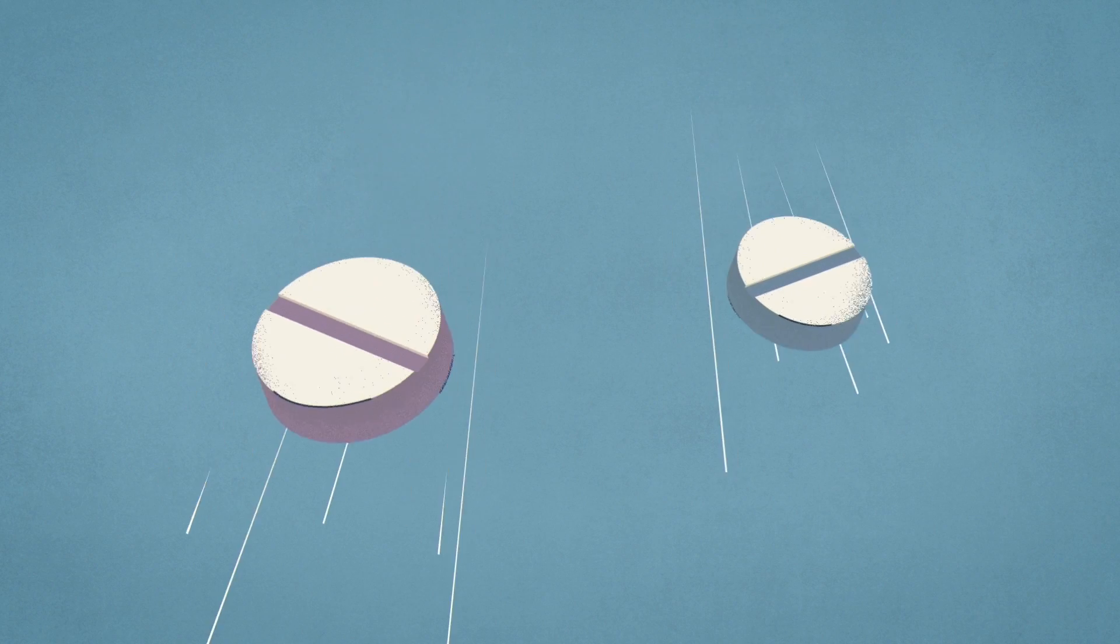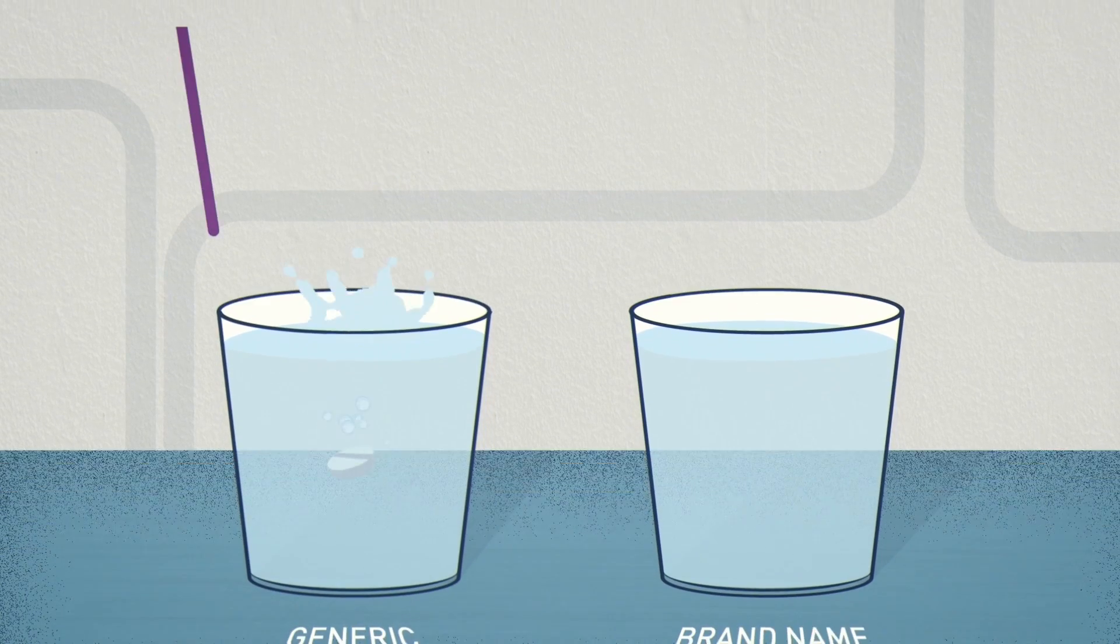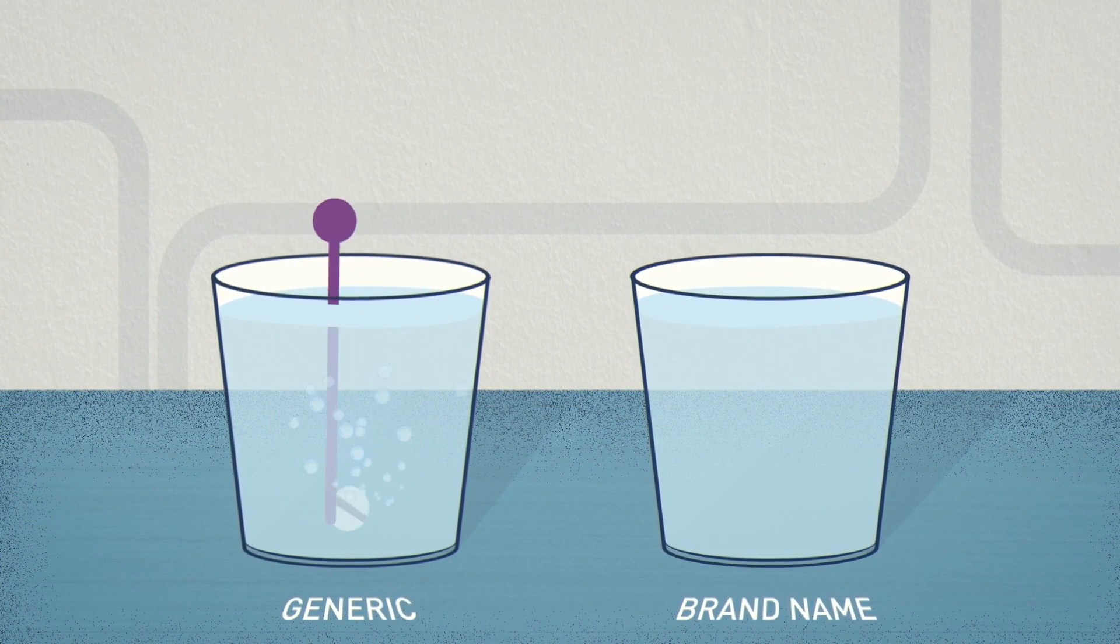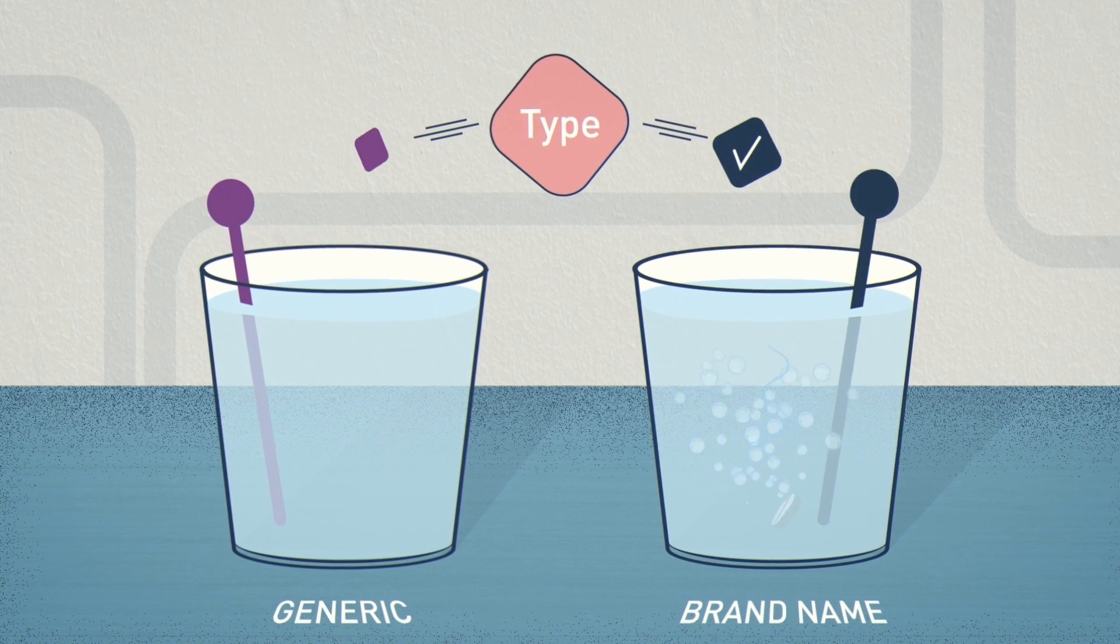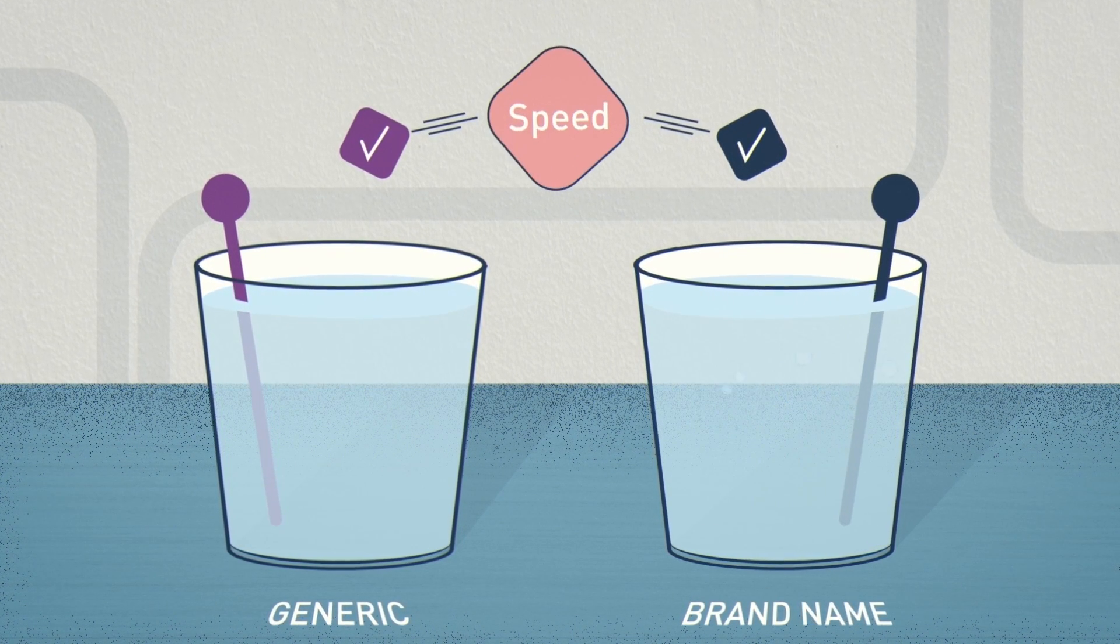First, there are requirements about the drug itself. The generic drug must be pharmaceutically equivalent to the brand-name drug that came before it, meaning it's the same type of product and takes effect at the same speed.